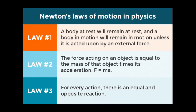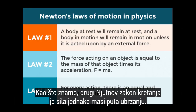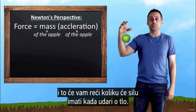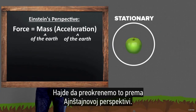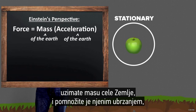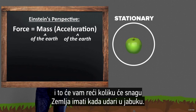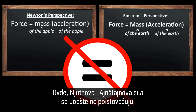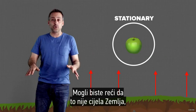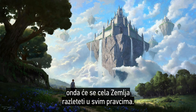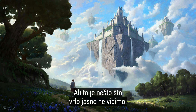Now let's take a look at the math. Newton's second law of motion is force equals mass times acceleration. When Newton drops an apple, you take the mass of the apple times its acceleration, and that tells you how much force it will have when it hits the ground. Now let's flip that into Einstein's perspective. If the ground is rising up to hit the apple, you take the mass of the entire earth times its acceleration, and that tells you how much force the earth will have when it hits the apple. Since the earth has way more mass, the earth will hit the apple with way more force. Newton's force and Einstein's force do not equate whatsoever. You might say it isn't the entire earth — just a part of the earth accelerating upward — but then you have the whole earth dividing asunder and breaking apart in all directions, which we very clearly do not observe.